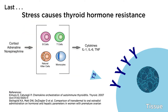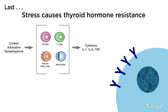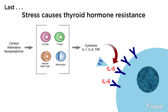Lastly, stress causes thyroid hormone resistance. Cortisol activates white blood cells that secrete cytokines — specifically IL-6 — which block the ability for T3 to interact with receptors on cells and tissues. By doing so, it causes hypothyroid symptoms and dysfunction.